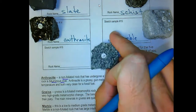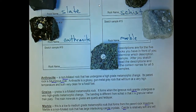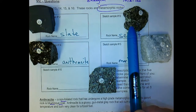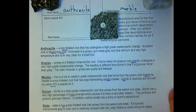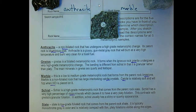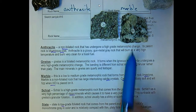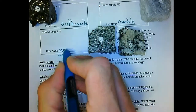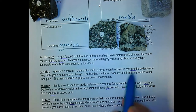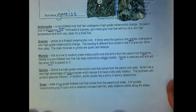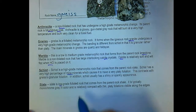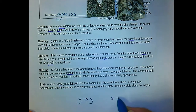Sample sixteen — number sixteen — has visible foliation, granular foliation as opposed to the flaky foliation of schist. It's high-grade metamorphic change and was originally granite. That's gneiss (G is silent). You can remember: G goes to G — granite metamorphoses into gneiss. And S goes to S to S — shale goes to slate, slate goes to schist.